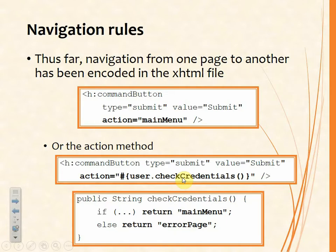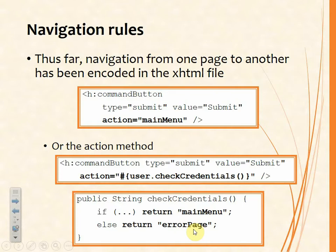One of the things we might do is say that if this checking fails we could throw an exception, or we could return an alternative string. We could say there are going to be several outcomes, and in the check credentials method if everything is okay we'll return 'main menu', else we'll return 'error page'. That now gives us, still hard-coded, two routes from the button click — we'll either go to the main menu or we'll go to an error page. This introduces the idea that for one button click there might be more than one outcome.